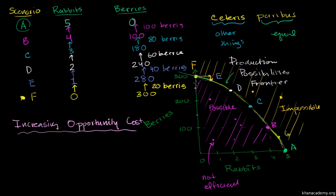At E, it gets even steeper. You're giving up even more. You're giving up even more of the berries per unit rabbit. And now in D, you're giving up even more. And then you're giving up even more.